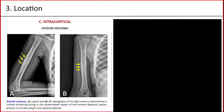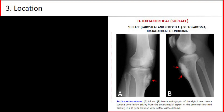Intracortical, seen in osteoid osteoma. This X-ray shows osteoid osteoma: lateral and anteroposterior radiographs of the right humerus demonstrate cortical thickening arising in the posterolateral aspect of the humeral diaphysis in a 9-year-old girl. Juxtacortical or surface, seen in surface, parosteal and periosteal osteosarcoma, and juxtacortical chondroma. This plain X-ray shows surface osteosarcoma: anteroposterior and lateral radiographs of the right knee show a surface bone lesion arising from the posteromedial aspect of the proximal tibia in a 19-year-old man.